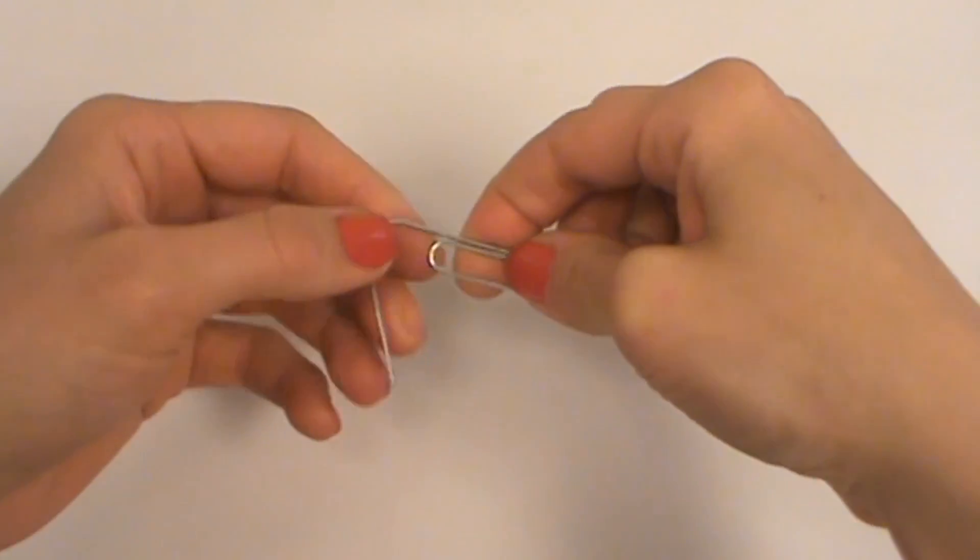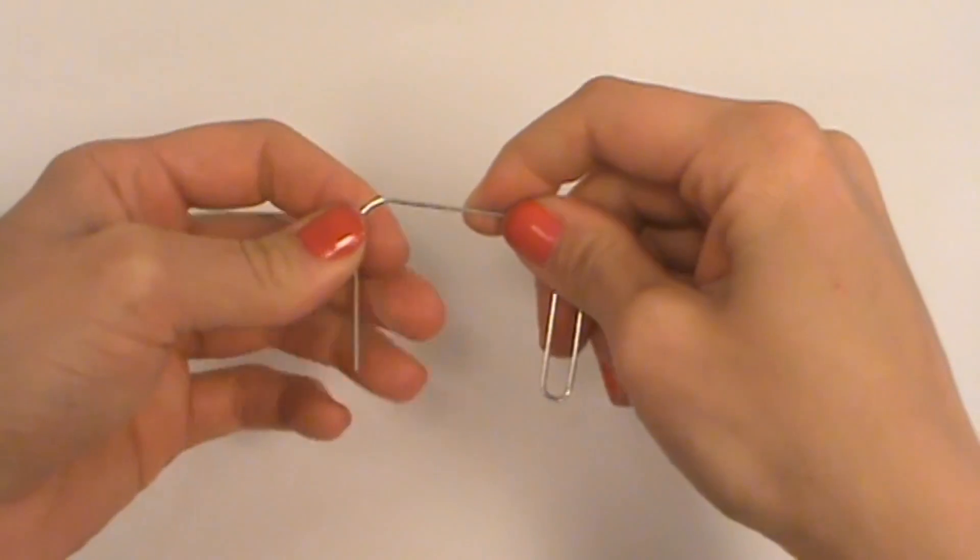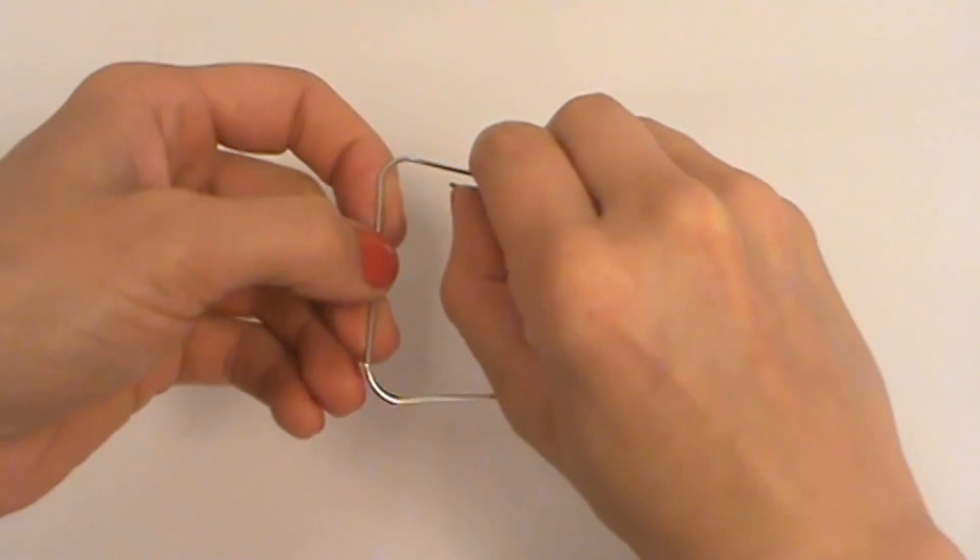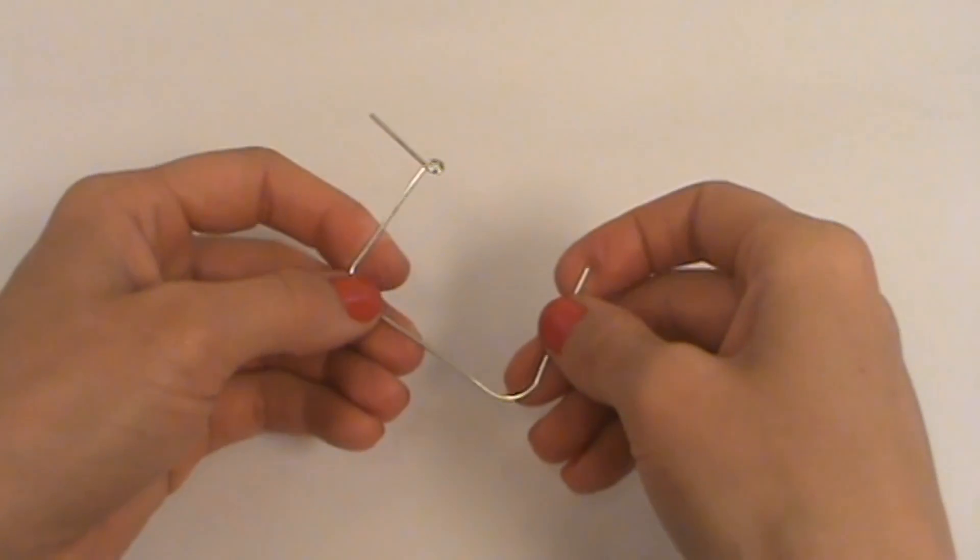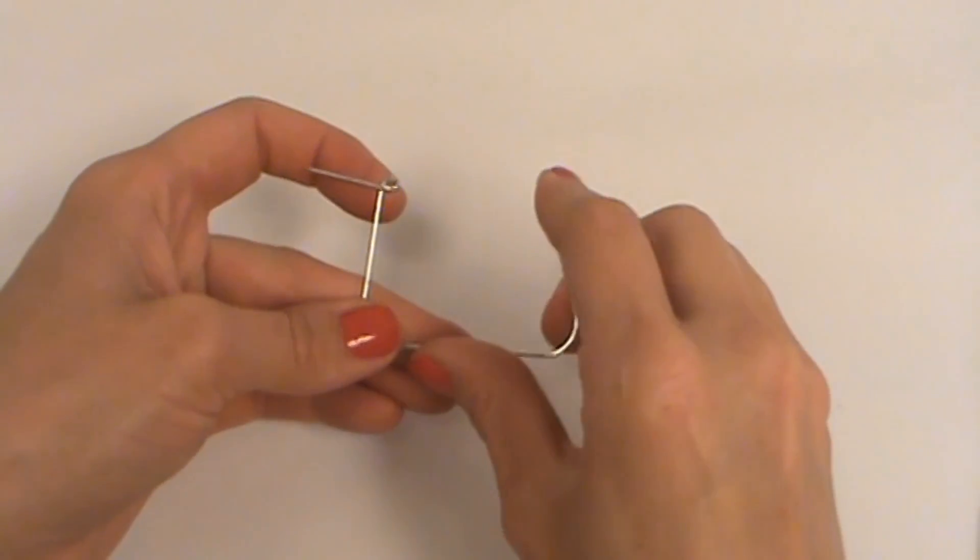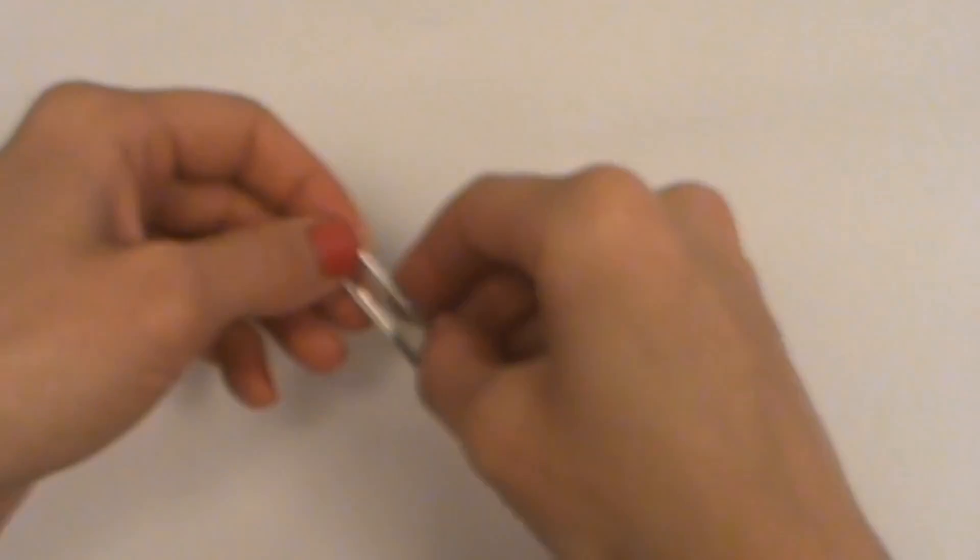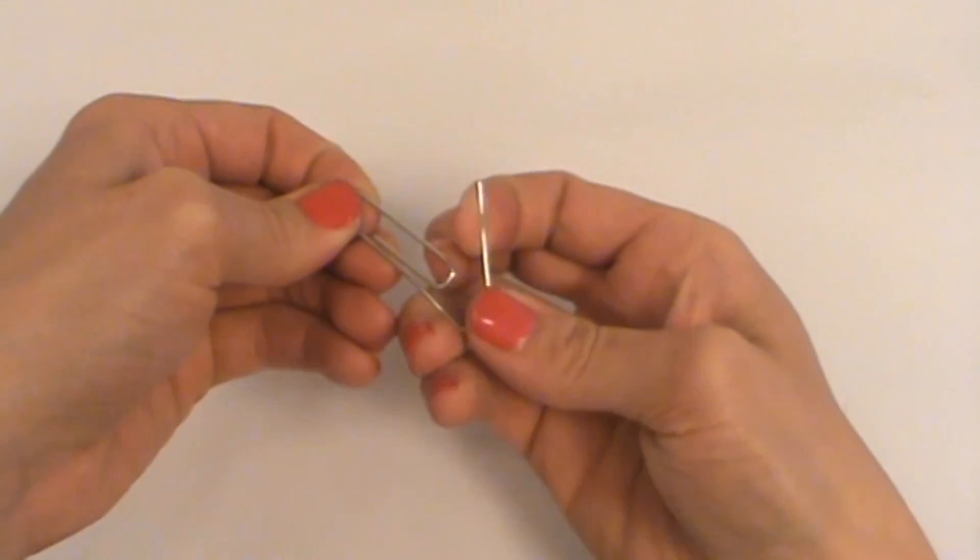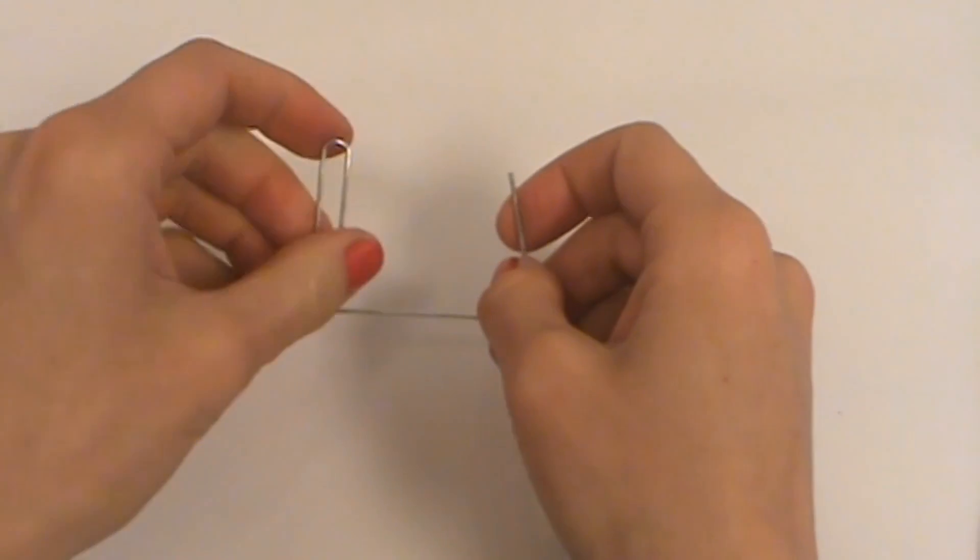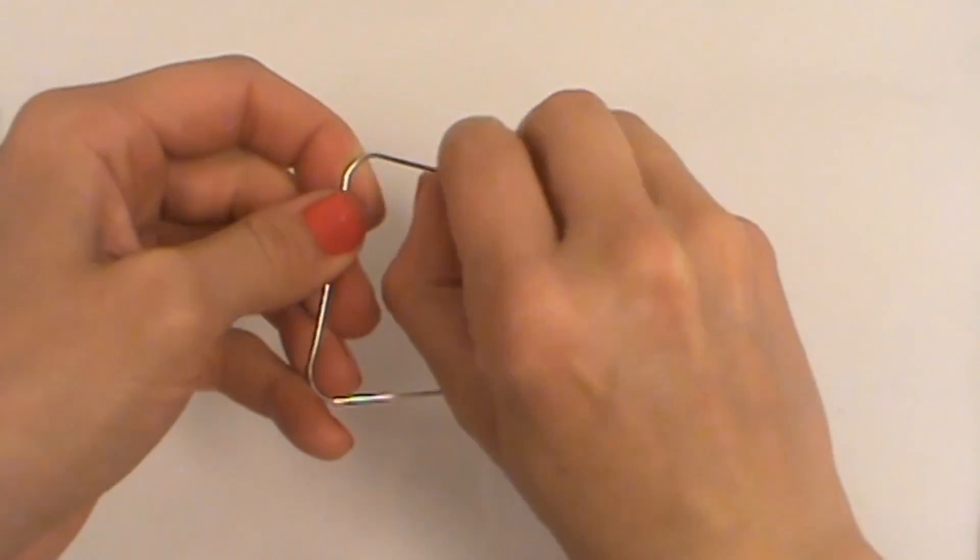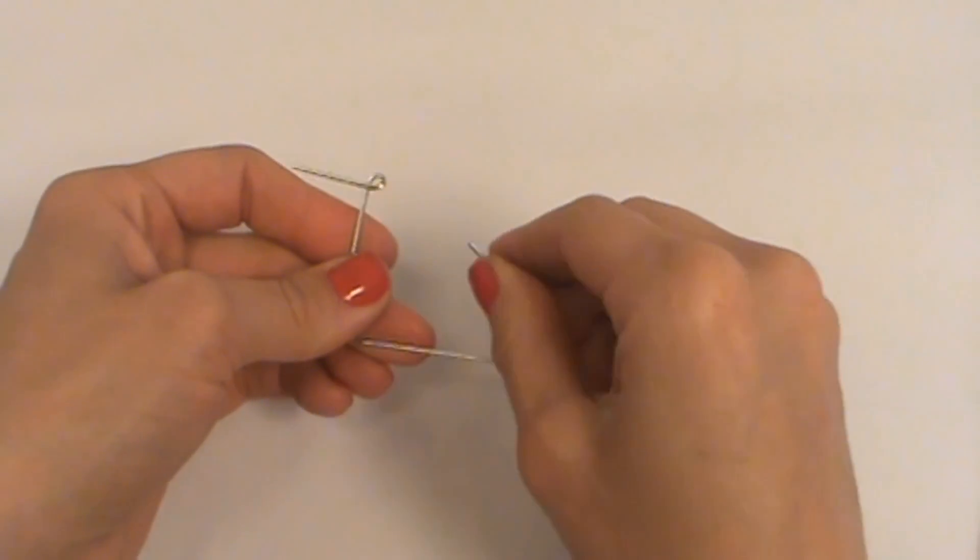Now take your two paper clips and bend them as shown here. Let's take a look at that just one more time. You want to try to fold the two paper clips so that they are identical as possible. The reason is that these paper clips are what the coil will rest on to spin, so the more identical the paper clips are, the better your motor will perform.